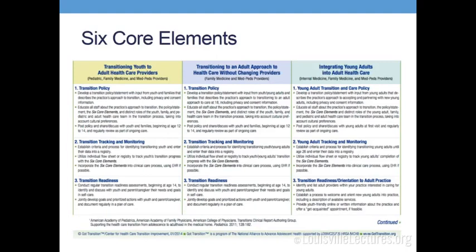The six core elements were released as part of the new consensus report, helping to fill the gap from the previous 2002 report. It's a lot more algorithmic, specifically detailing how providers can transition patients whether within their own clinic — such as a med-peds or family practice — or physically going from a pediatrician to an internist. Even if the patient is staying within their own practice, there is still transition that needs to take place: they're not just little Timmy anymore, they're now an adult, and you need to address them as such.